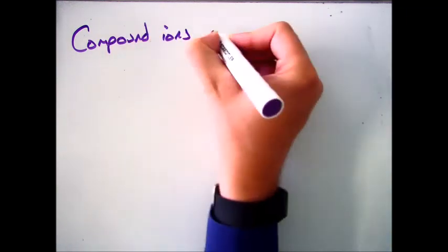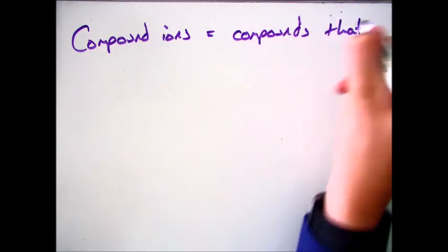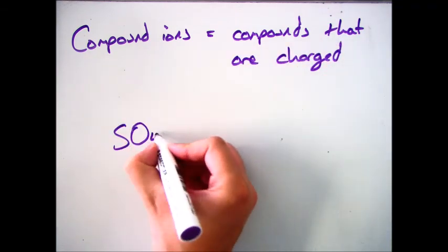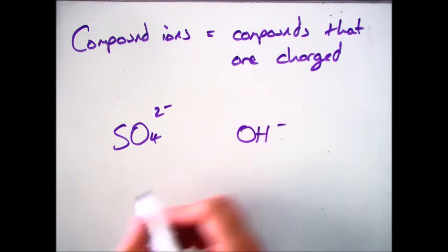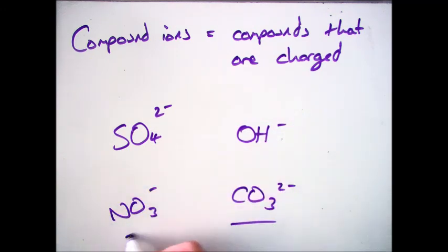So just as a recap then, a compound ion is any compound that is charged. And the ones that you need to know for the exam in particular are sulfate, which is SO4 2-, OH- which is hydroxide, NO3- and CO3 2-, which is nitrate and carbonate.